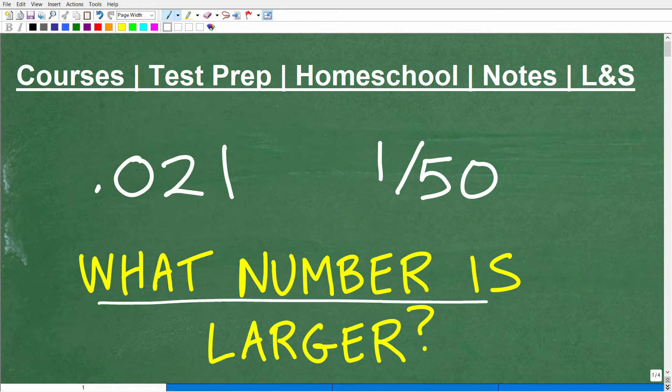Okay, so what number is larger? Well, we're comparing two numbers here. We have one number written as a decimal and the other as a fraction. So we're trying to figure out, is 0.021 larger than 1 over 50, or is 1 over 50 greater than 0.021?